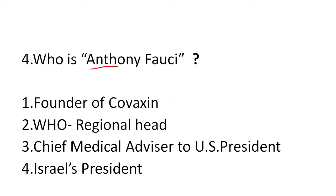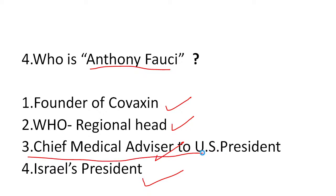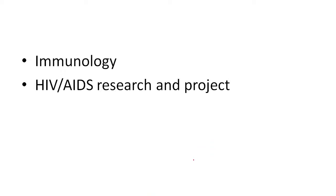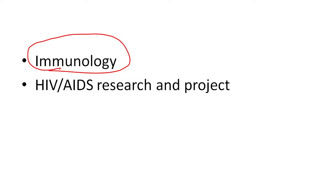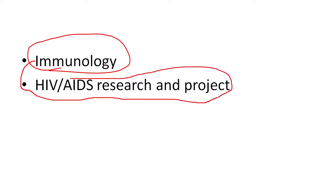The next question is: who is Anthony Fauci? Options: one: founder of Covaxin, two: WHO regional director, three: chief medical advisor to the US president, four: Israel's president. The answer is three — chief medical advisor to the US president. He is actually a scientist in the field of immunology, which is about the immune system. He has contributed a lot to HIV and AIDS research, and he often speaks about COVID, coronavirus, and vaccines.